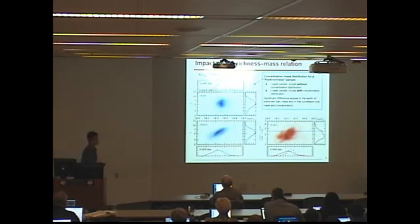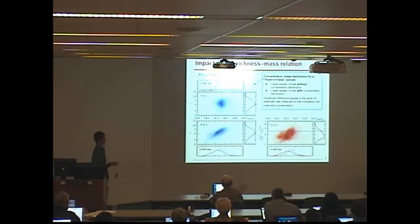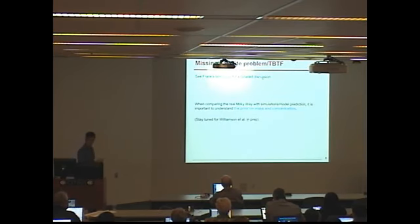If you need a very clean mass bin, one approach is to use another proxy that can select out the concentration — such as the luminosity gap. By selecting objects with a higher luminosity gap, you can in principle select a sample that has similar concentration properties. There is also another implication about the two-bit fail problem, but Frank already discussed this extensively, so I'm going to skip it — go back and see Frank's talk.